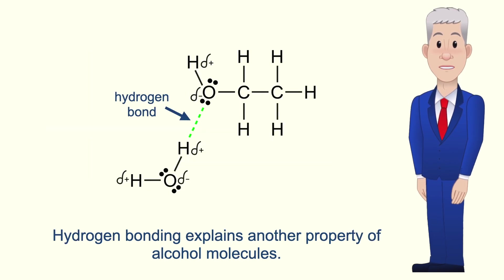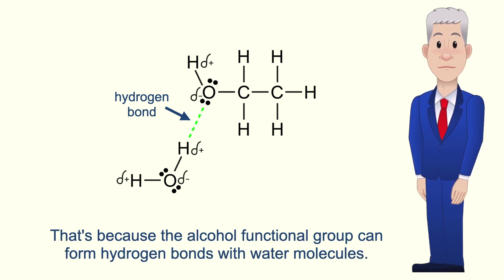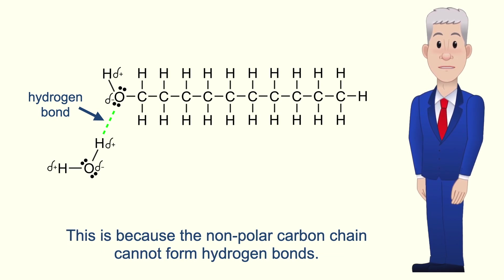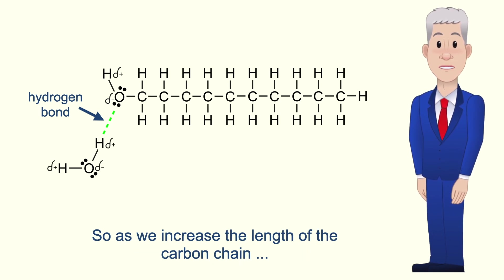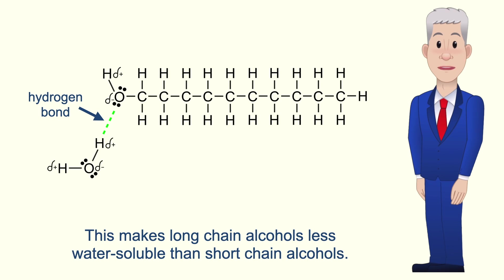Hydrogen bonding also explains another property of alcohol molecules. Alcohols are highly soluble in water because the alcohol functional group can form hydrogen bonds with water molecules. As we increase the length of the carbon chain, alcohols become less soluble in water. This is because the non-polar carbon chain cannot form hydrogen bonds, so a greater part of the molecule is unable to hydrogen bond to water molecules. This makes long chain alcohols less water soluble than short chain alcohols.